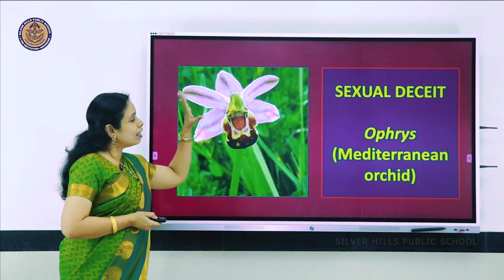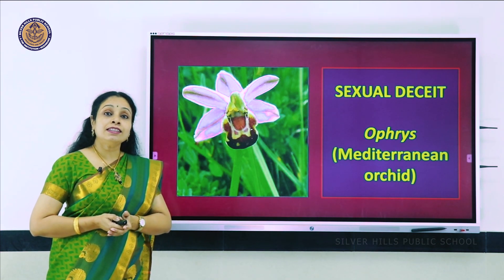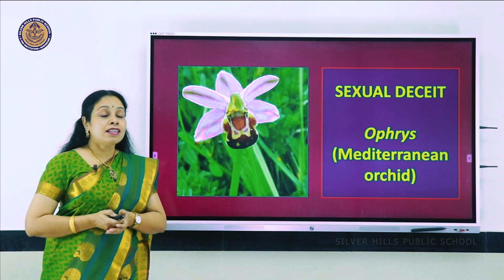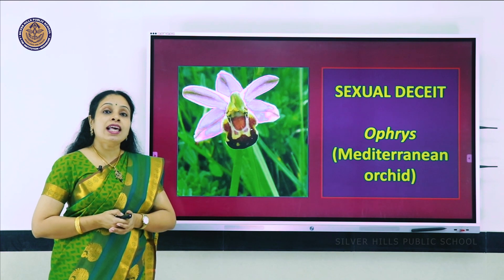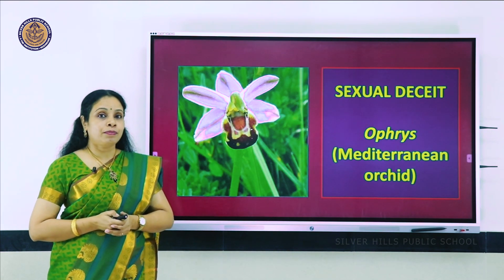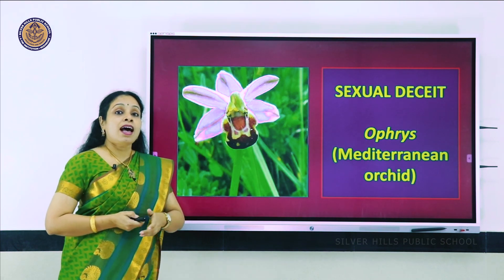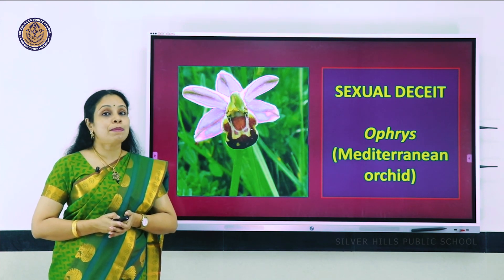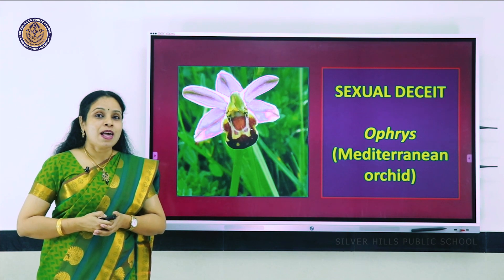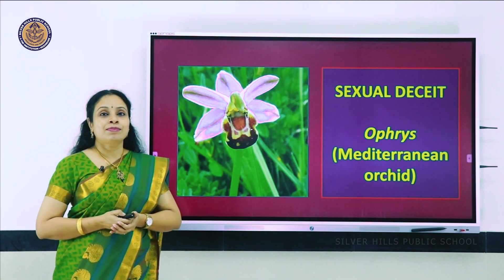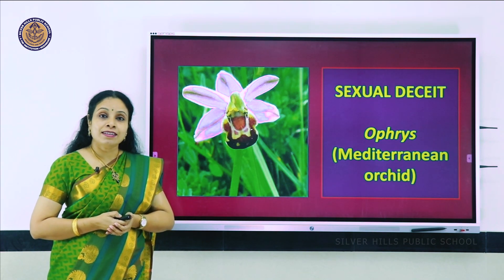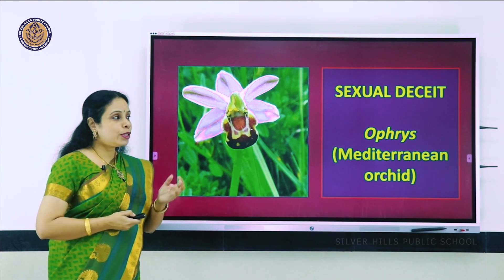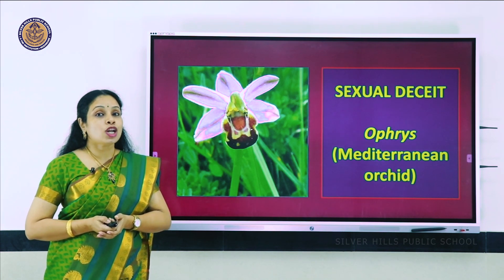You can see this flower's petals all have a particular color but one petal is different. This flower is employing a technique called sexual deceit to get itself pollinated. One of its petals has an uncanny resemblance to a female bumblebee. Due to this feature, male insects come and alight on it for pseudo-copulation and in that process the flower gets pollinated. This flower is Ophrys, the Mediterranean orchid.